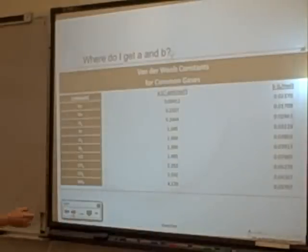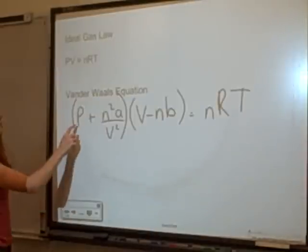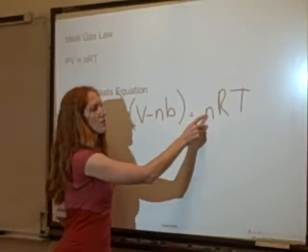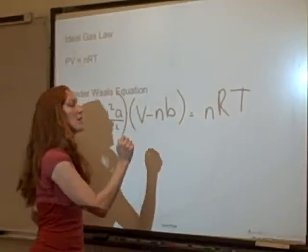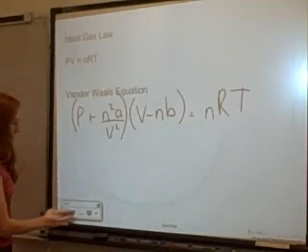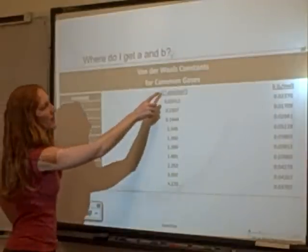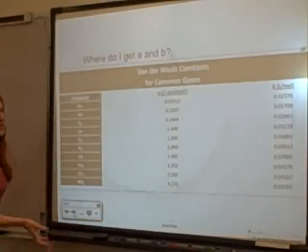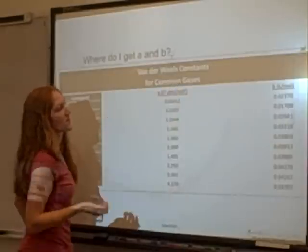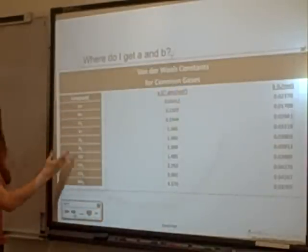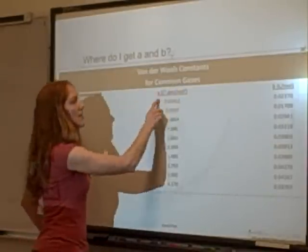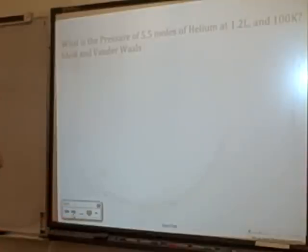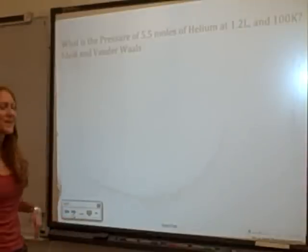In the van der Waals equation, we have pressure, moles, volume, moles again, the gas constant, and temperature — plus constants 'a' and 'b'. These constants come from a table: someone determined them experimentally in a lab. You look up which gas you're using and find its 'a' and 'b' constants, then plug them in.